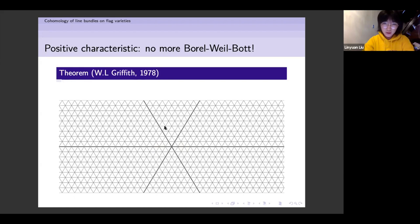In characteristic zero, in the dominant chamber we have H^0, in the next two chambers H^1, then H^2, and then H^3. But once we move to positive characteristic — this picture shows the case p equals 3 — in these red regions we will have both H^1, H^2, and H^0. This was first proved by Griffith.